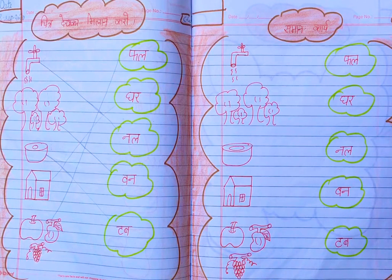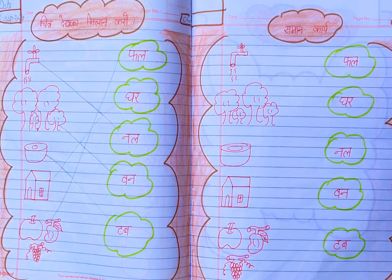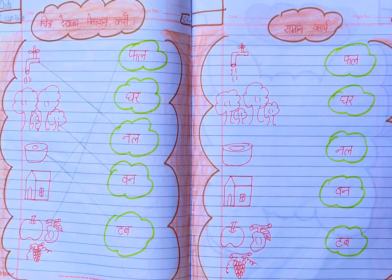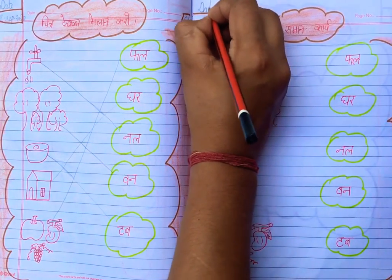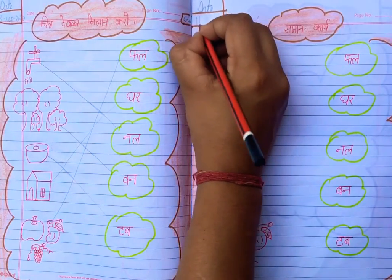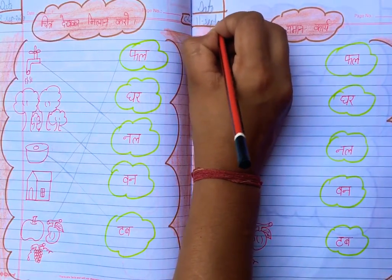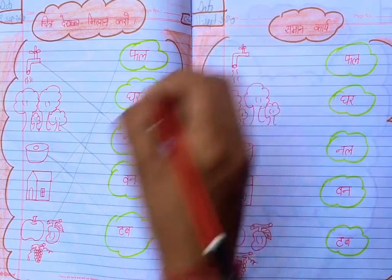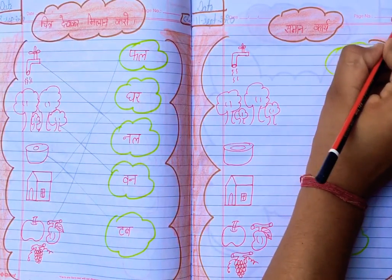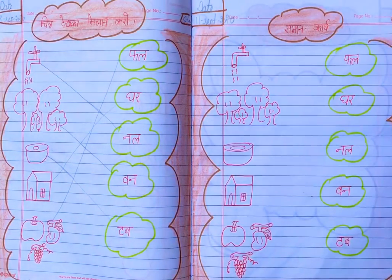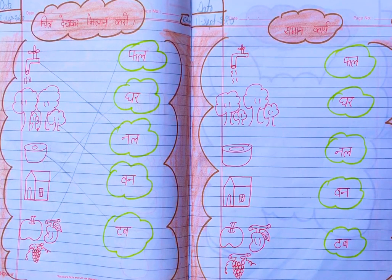Good morning to all of you, welcome to online classes. Students, take out your Hindi notebook, open your Hindi notebook, and first of all write down the date. Today's date is 11 September 2020 and day is Friday. Also write down CW. Today's topic is chitra देखकर मिलान करो — look at the picture and match the word.